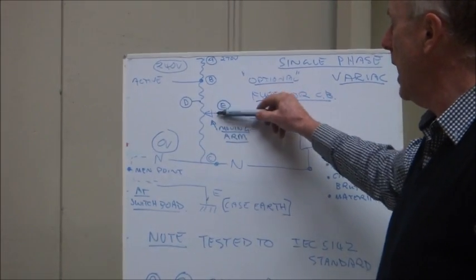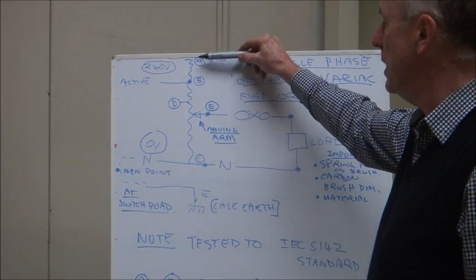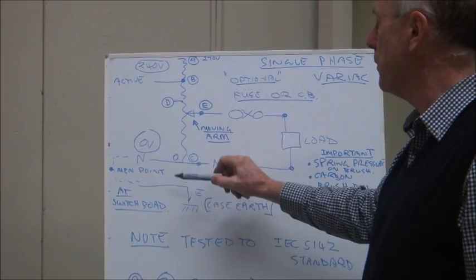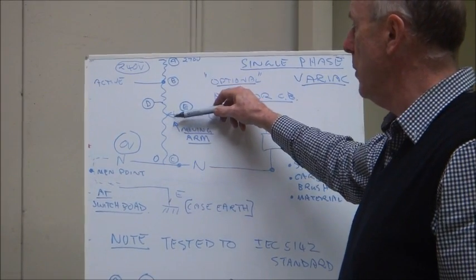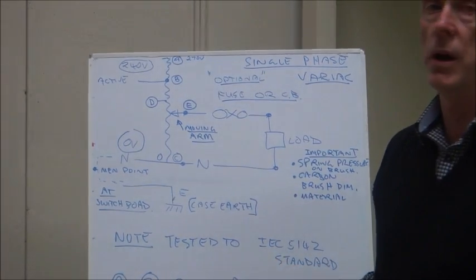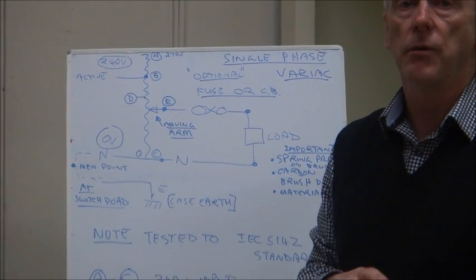You have a moving arm which moves up and down and that can move actually up to 270 and then down to zero which is here. The input stays the same of course and the moving arm contacts the windings by use of a carbon brush on the top of the windings.